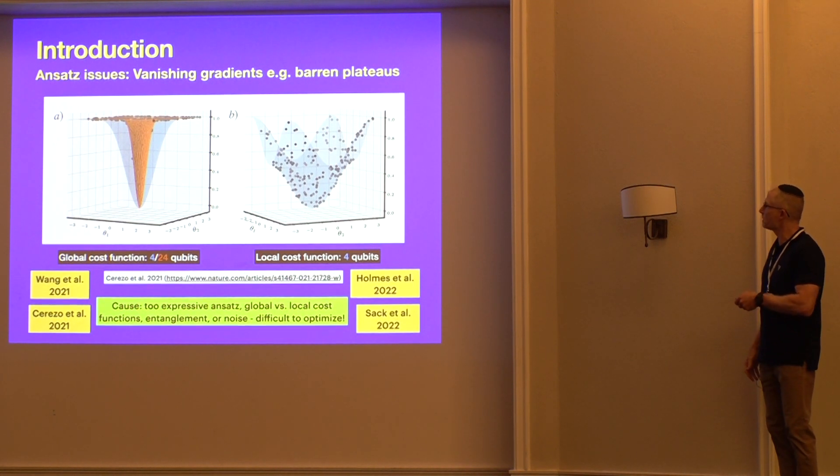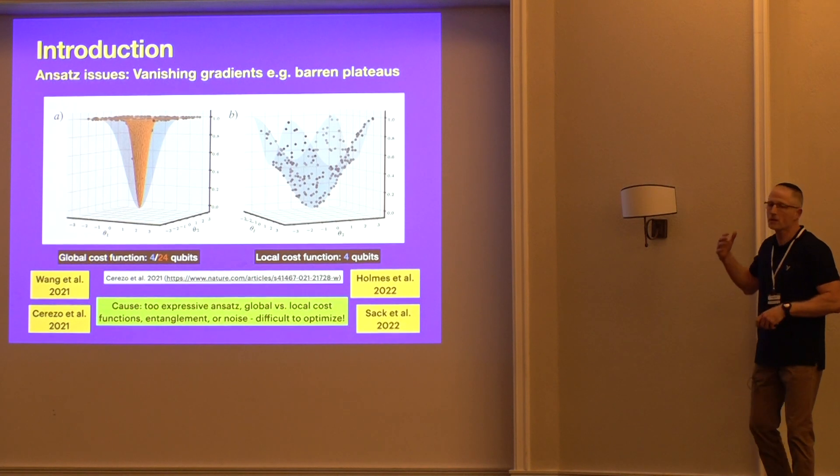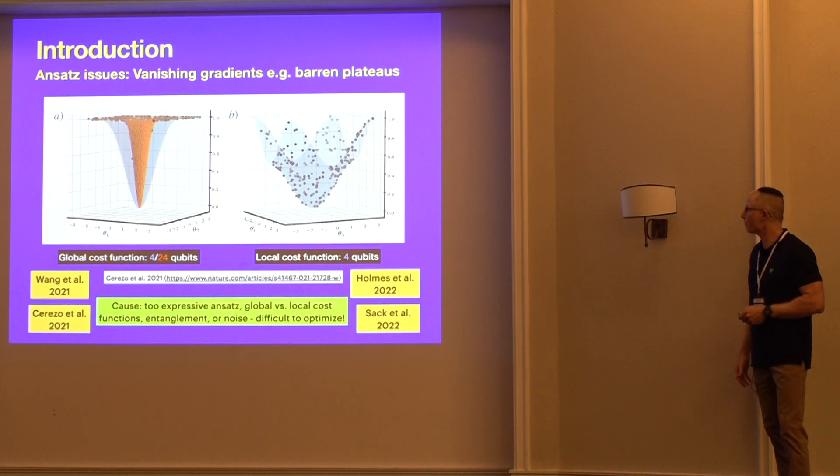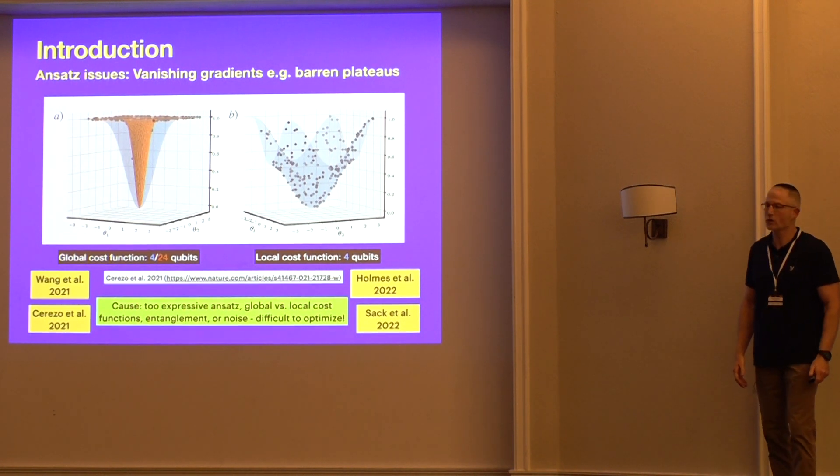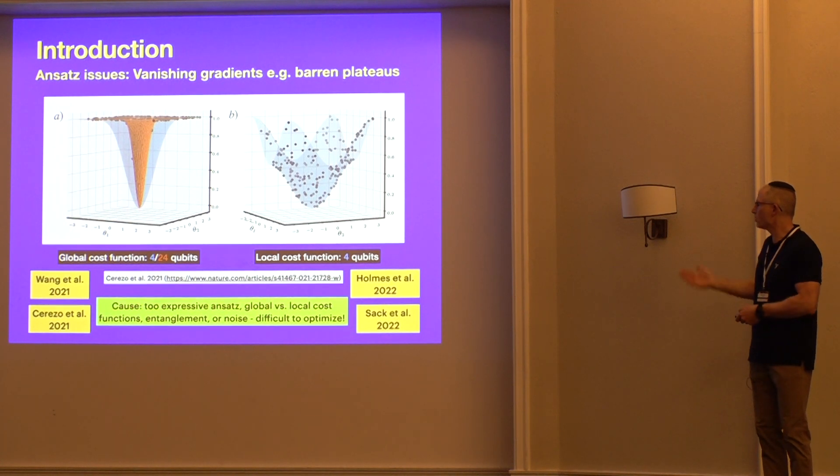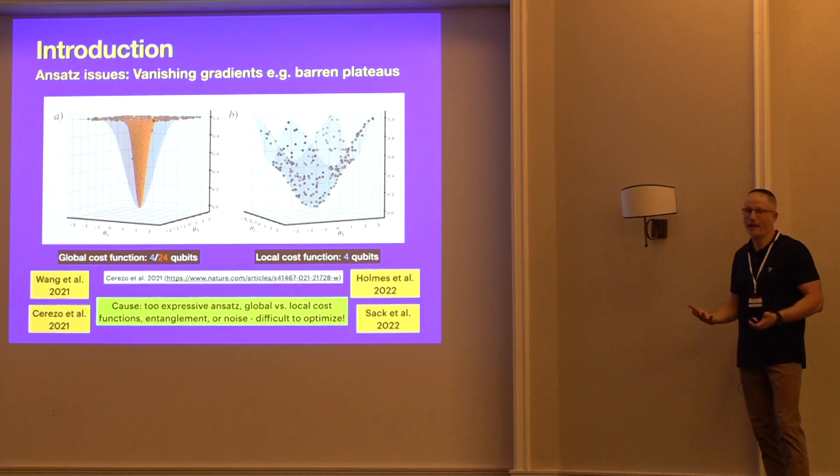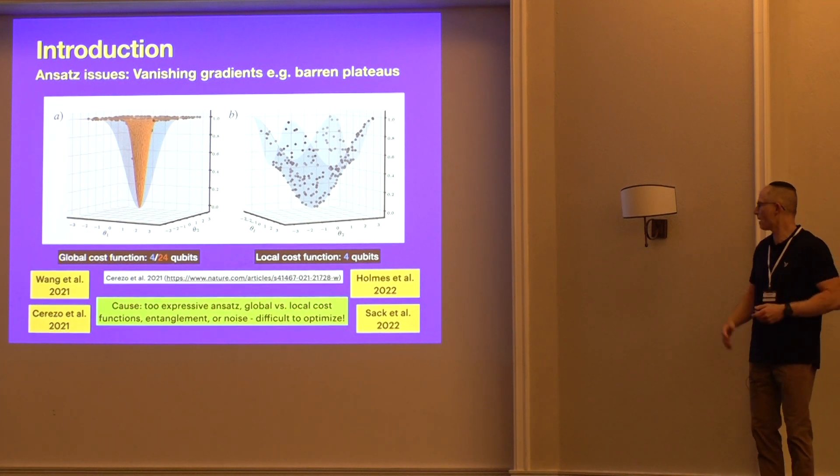This makes it very difficult to use a gradient-based optimizer to know which way you're supposed to go to find your solution. The local cost-function seems to be able to handle it better for this particular problem, but this is an issue that plagues all parameterized quantum circuits which are used as ansatz in VQA. There's a lot of activity on this problem. It has to do with how expressive the ansatz is, whether it's a global or local cost-function, how much entanglement there is, noise—people are still debating what are the main causes, but it's definitely a challenge and it makes the problem difficult to train.